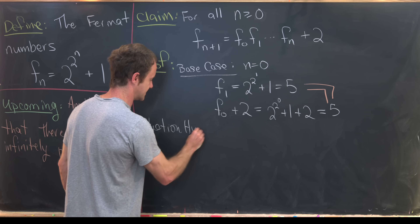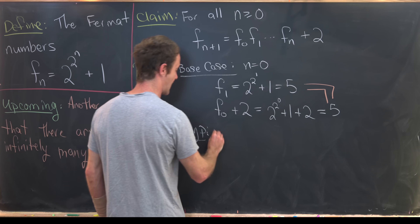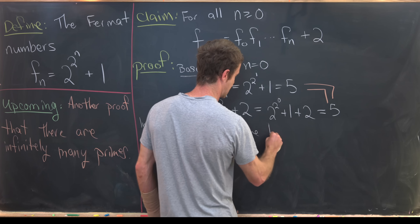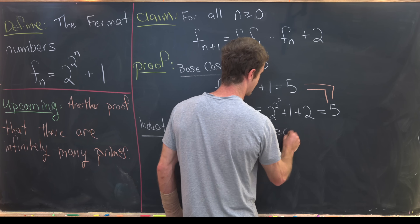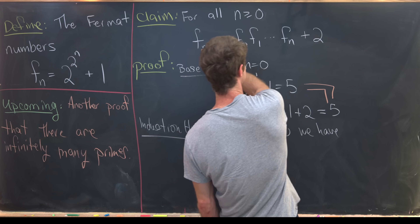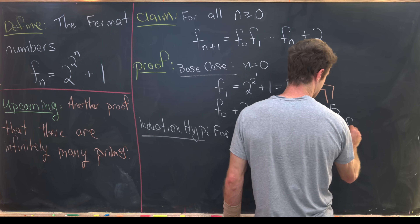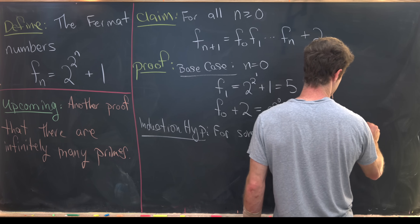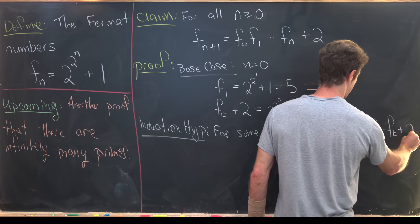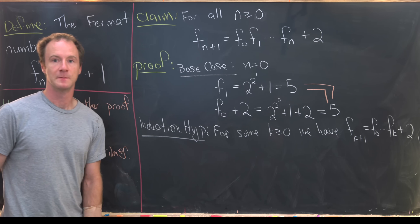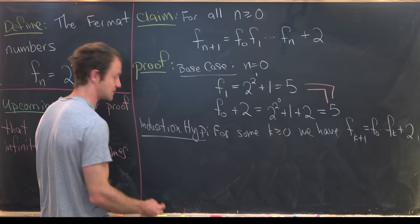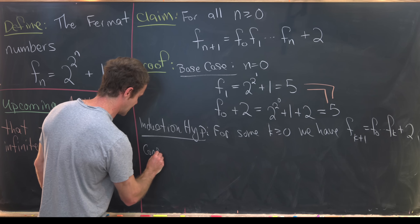Now let's state the induction hypothesis: for some k greater than or equal to 0, we assume the statement is true, namely that F sub k plus 1 equals F sub 0 times F sub 1 up to F sub k, plus 2. Then we want to consider the next case.